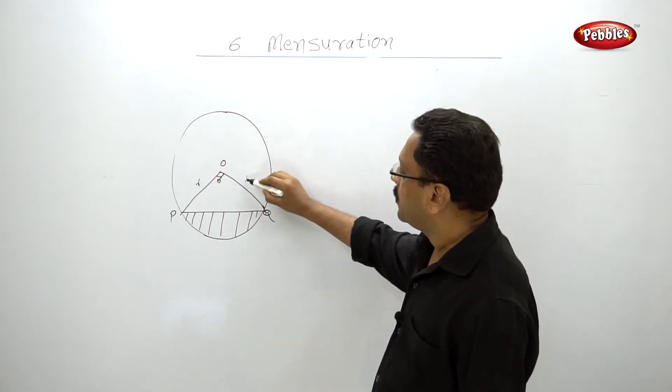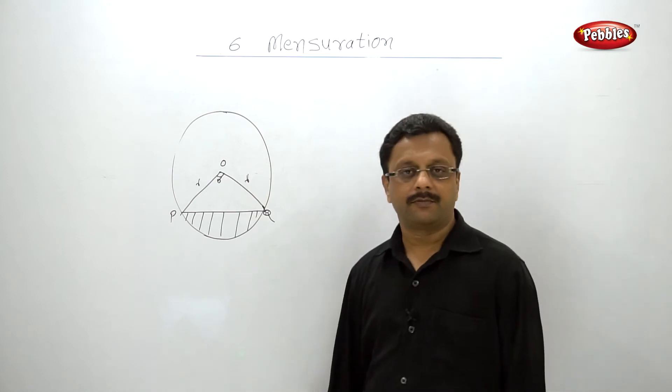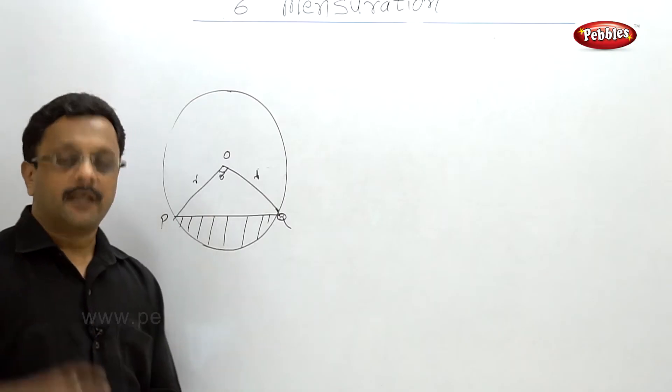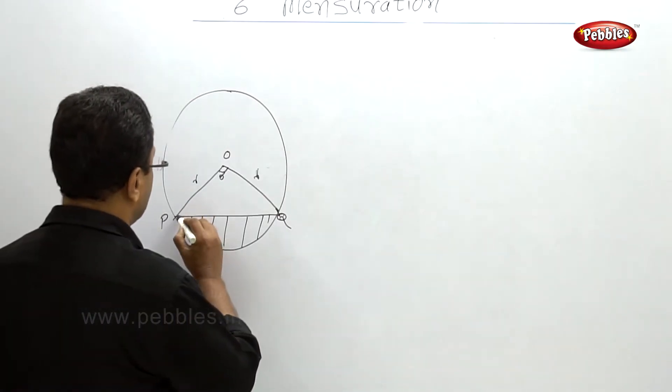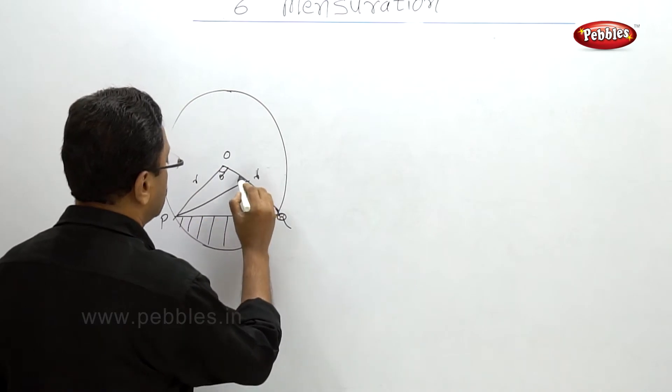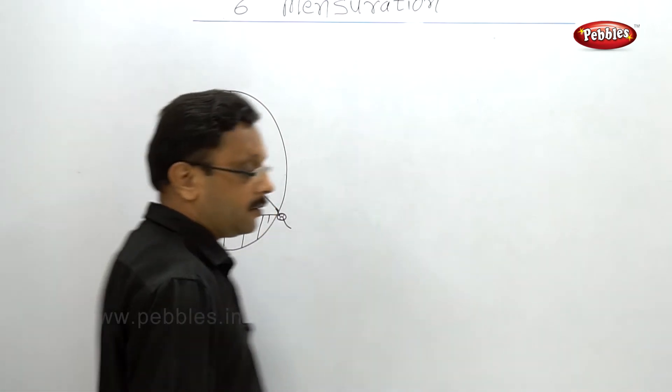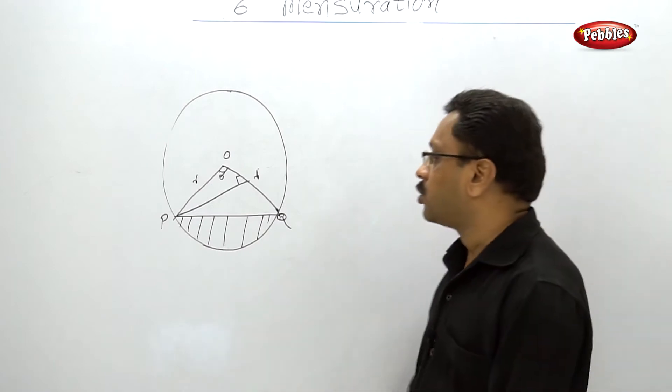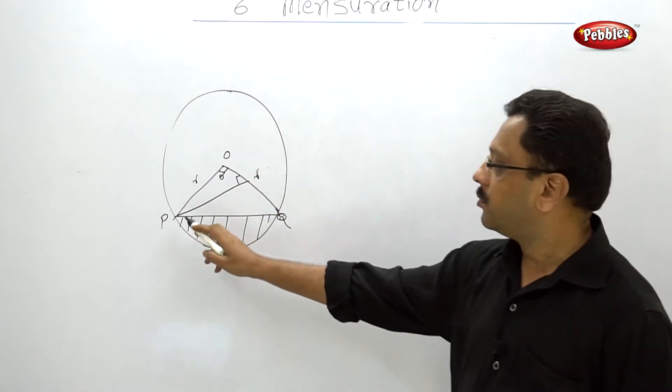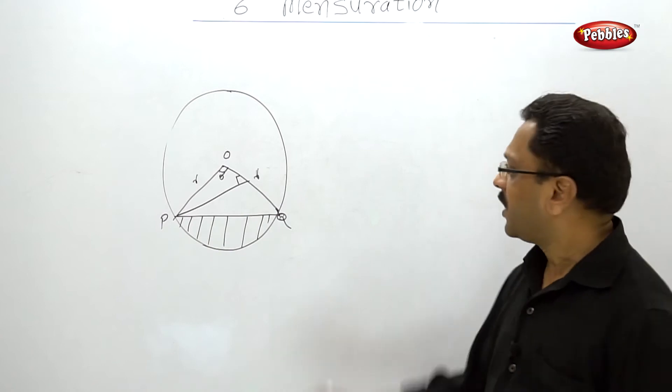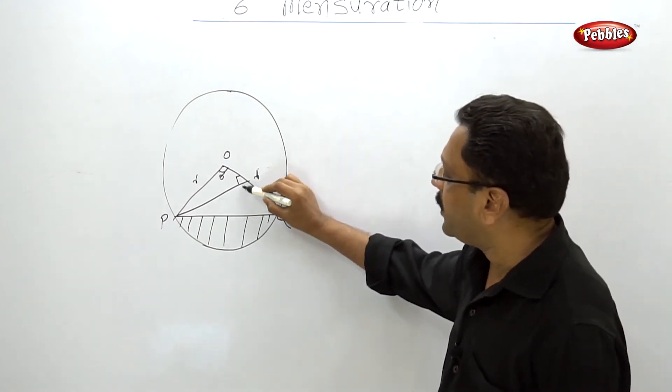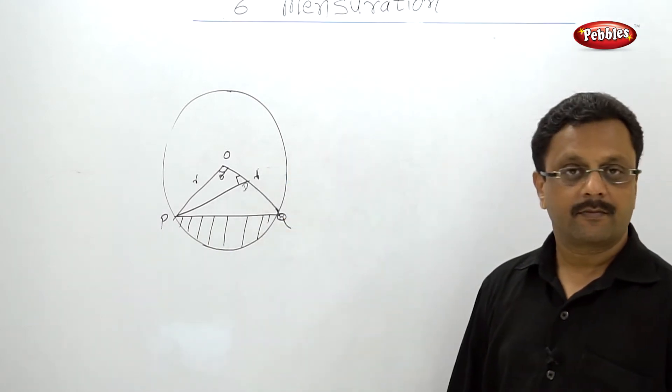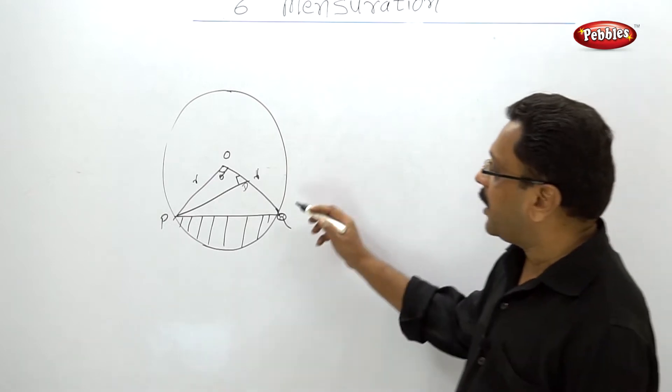Let us make use of trigonometry. Now suppose this is a right angle, a perpendicular drawn on this radius from this side, let us call it as point D. Now what is the area of this triangle?